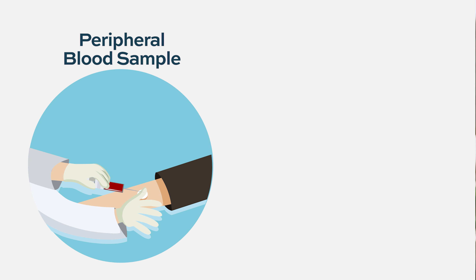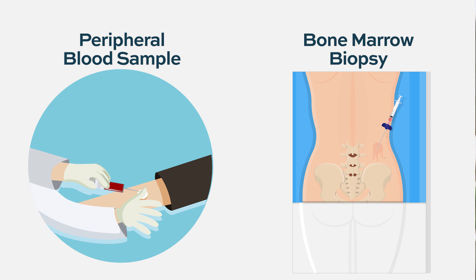Many times these tests can be done on peripheral blood samples if it's clear that there are a lot of leukemia cells circulating in the blood. However, the standard would be to do a bone marrow aspirate and biopsy to more fully characterize the leukemia at the initiation of therapy. And of course, looking for remission would require a bone marrow biopsy after therapy to prove that the leukemia is on the run — you can't do a remission analysis just from the peripheral blood.